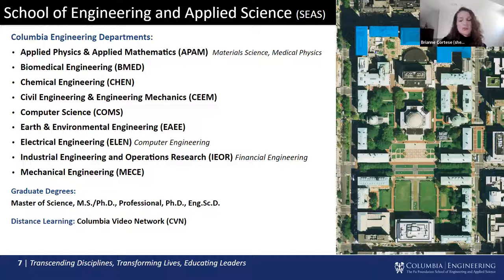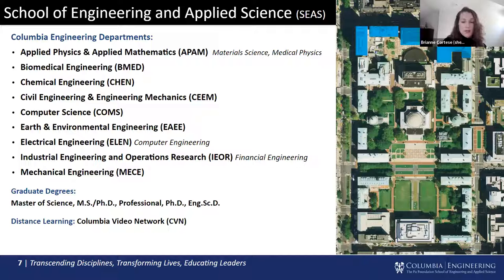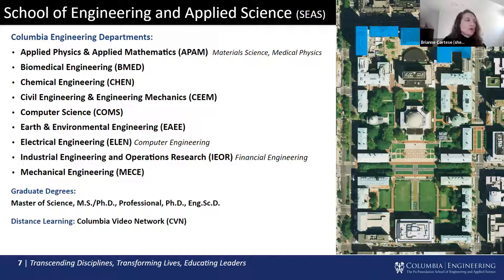In addition to graduate programs, Engineering also offers non-degree programs, one being the Certification of Professional Achievement in Data Science. There are also dual-degree programs offered in collaboration with other professional schools — for example, a dual MS offered by Computer Science and the Journalism School, and an MS/MBA jointly offered through Industrial Engineering and Operations Research and the Business School. At this time, Data Science is not offering dual-degree programs, but students do have the opportunity to cross-register for classes within SEAS and across campus.